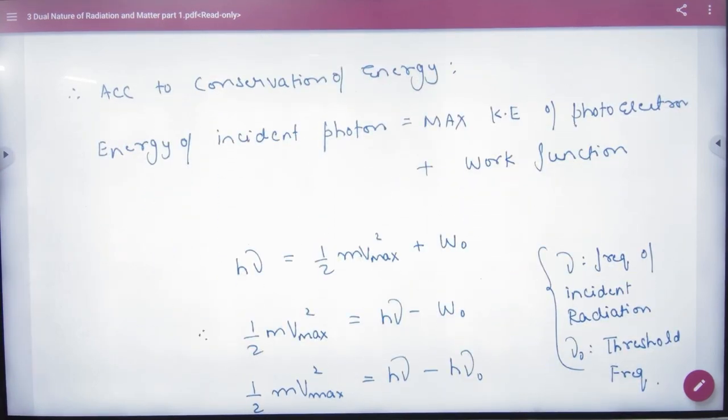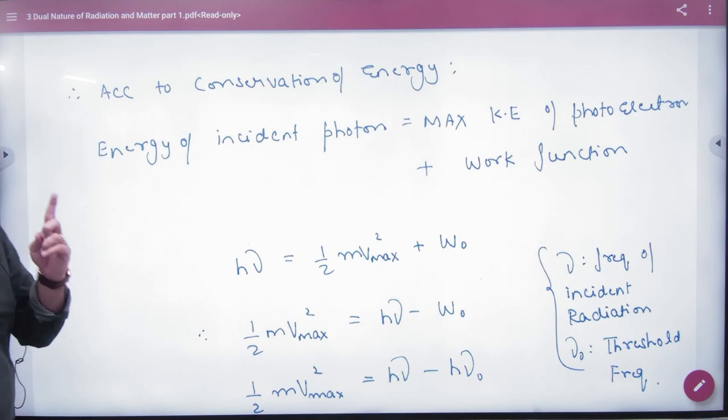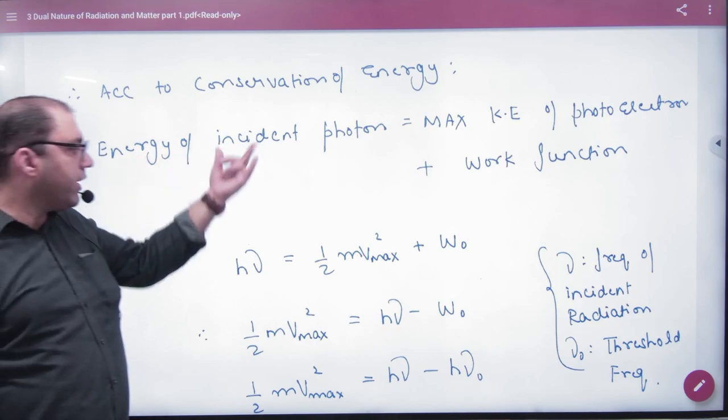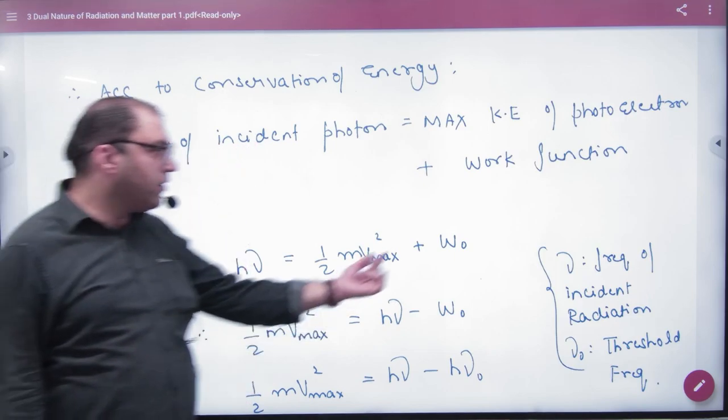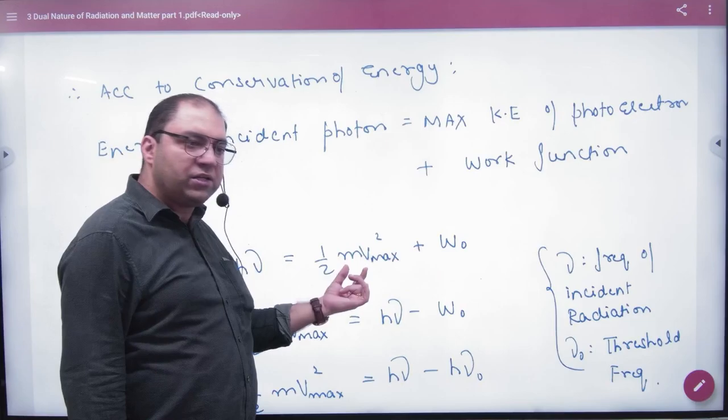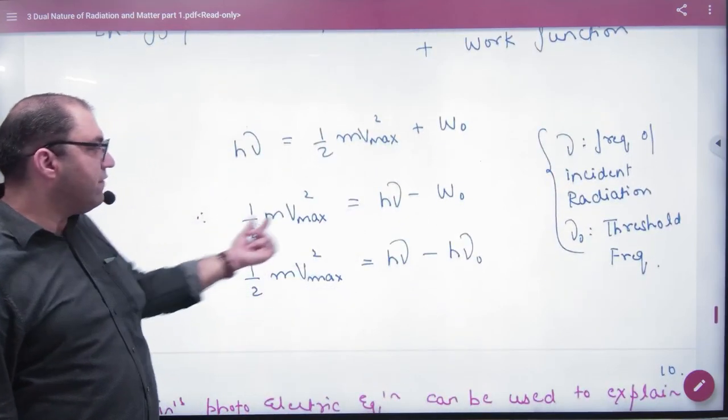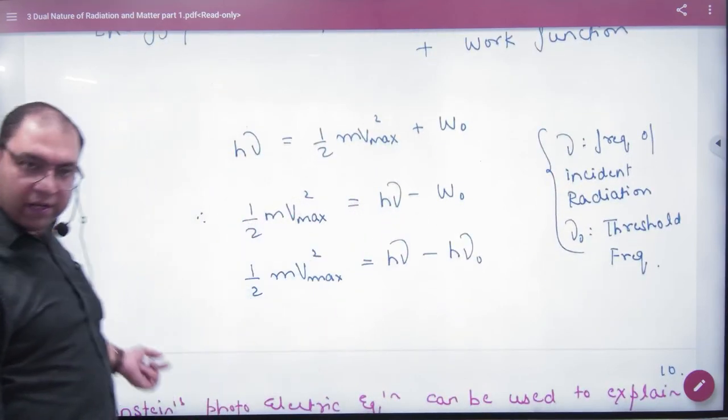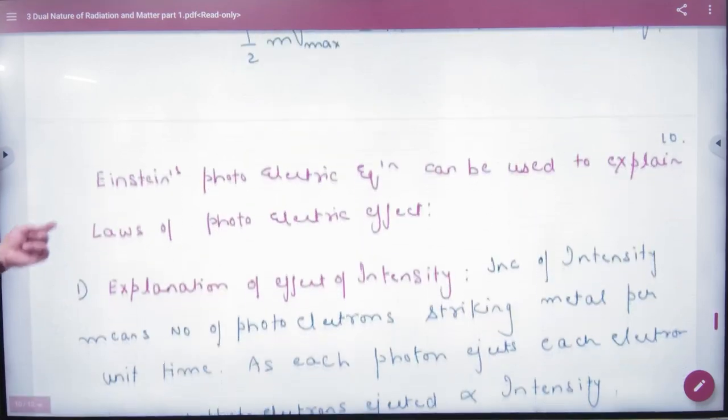Energy conservation is applied: one photon interacts with one electron. The equation is hν = W0 + ½mv², where hν is the photon energy, W0 is the work function, and ½mv² is the kinetic energy. This is Einstein's photoelectric theory.